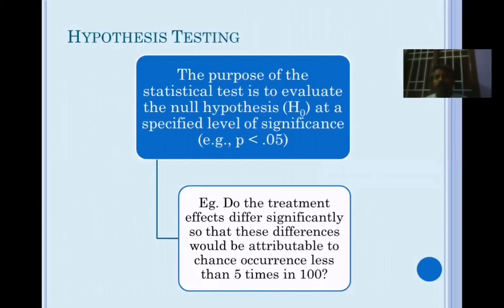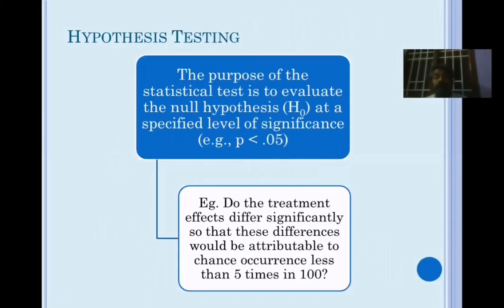Hypothesis is normally stated in the null form, and we decide whether to accept or reject this null hypothesis after statistical analysis. The internationally accepted standard is 0.05 — that is, up to 5% error by chance can be accepted. If the p-value goes beyond 5%, it will not be accepted. 5% is the internationally accepted standard for accepting or rejecting your null hypothesis.